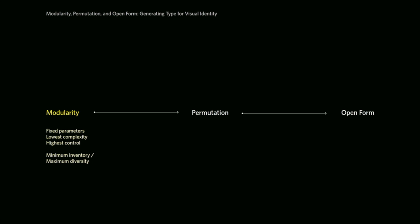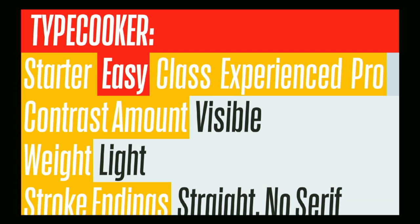Speaking specifically of modularity, this is the idea that parameters are fixed. There's a low level of complexity and the designer is exerting the most control. There's this idea first coined, I think, by architect Peter Pierce in the 1970s: minimum inventory, maximum diversity. You're starting with a small number of things and creating a large number of things from that. An example we could relate to is TypeCooker — breaking a typeface down into various parameters and then fixing those parameters. You hit refresh, you get a new set of parameters, but the idea is that you're designing a typeface based on those parameters.